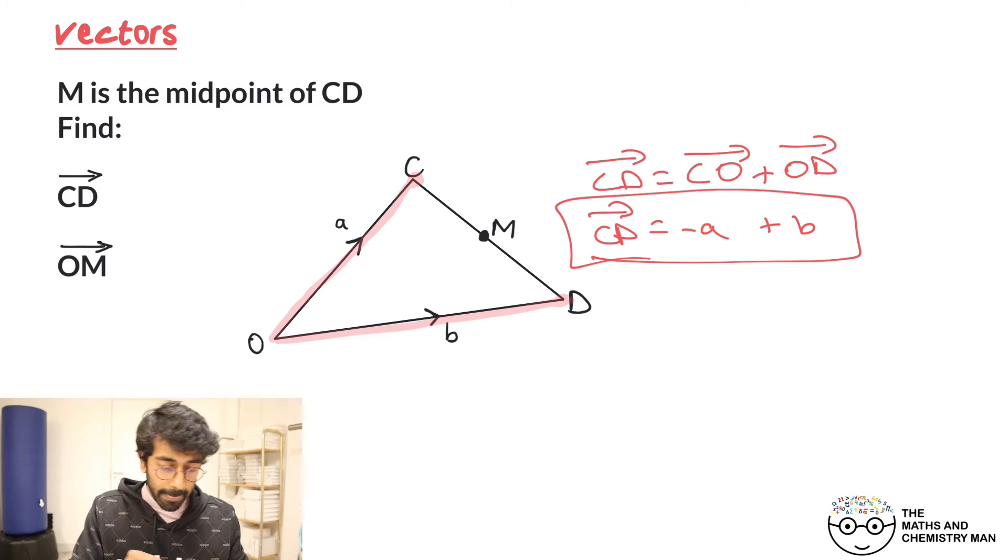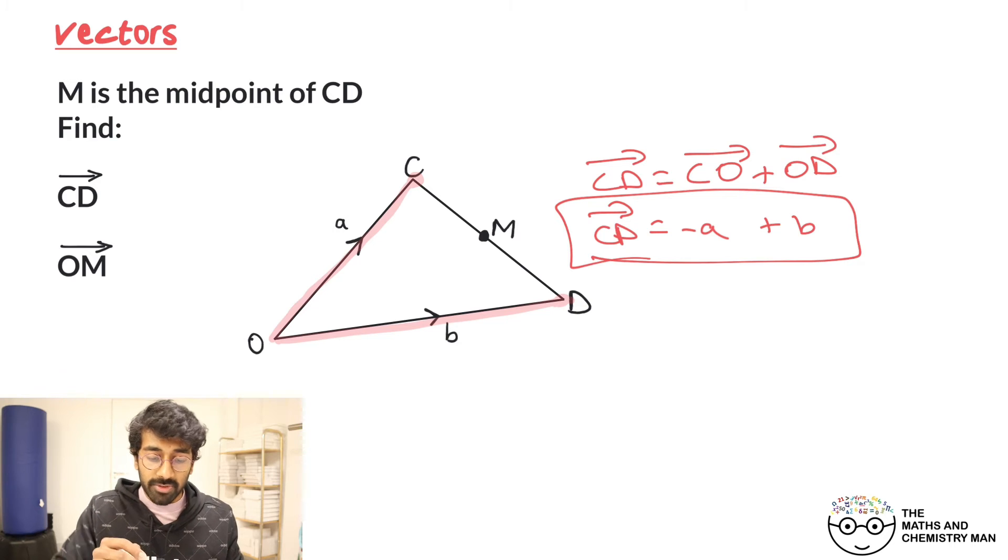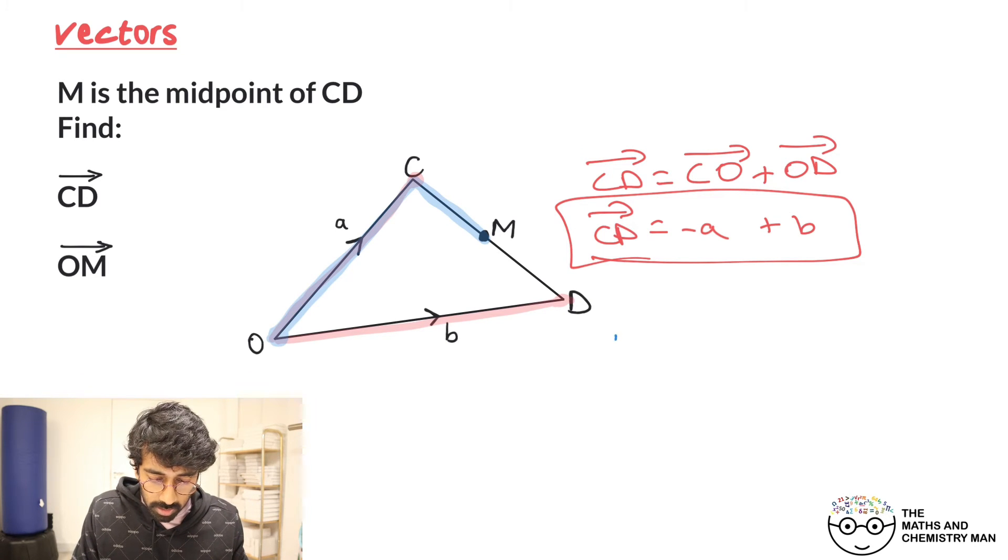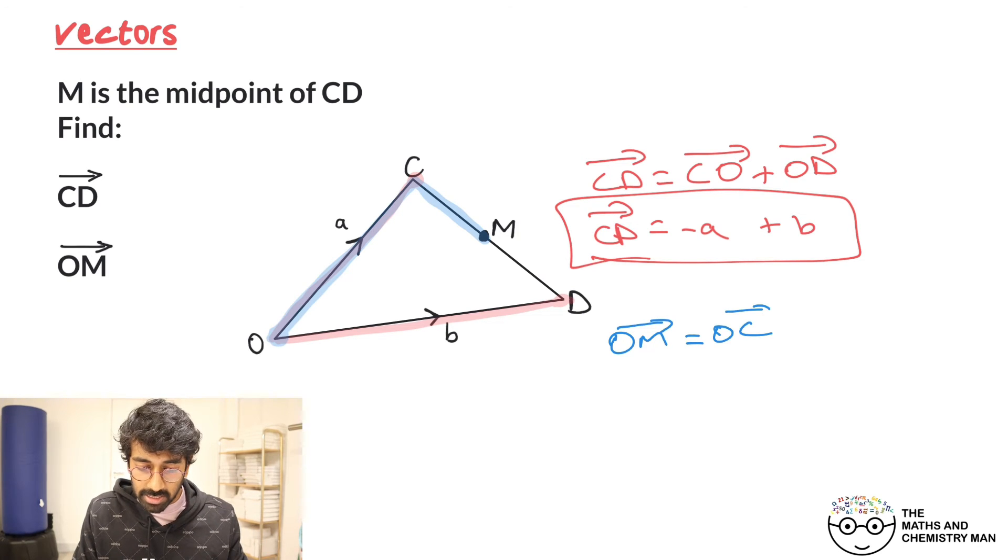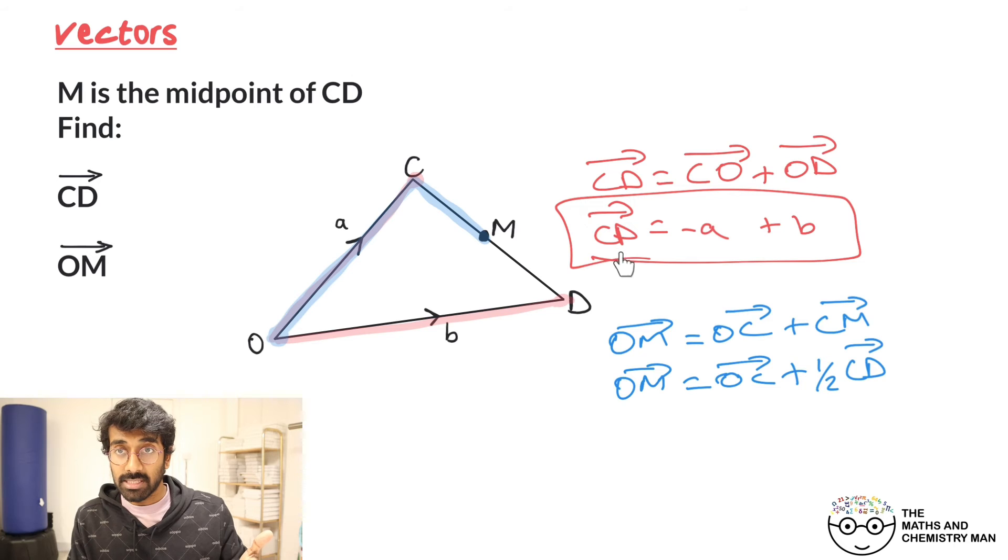And then OM. Again, I'm going to pick a route from O to M. The route I'm going to go with is from O to C and then from C to M. Now why did I do that? Well, because from O to M, if you go that route there, then what we're doing is going O to C and then C to M. But CM, as you can see, is going to be half of CD, and we already worked out CD, right?